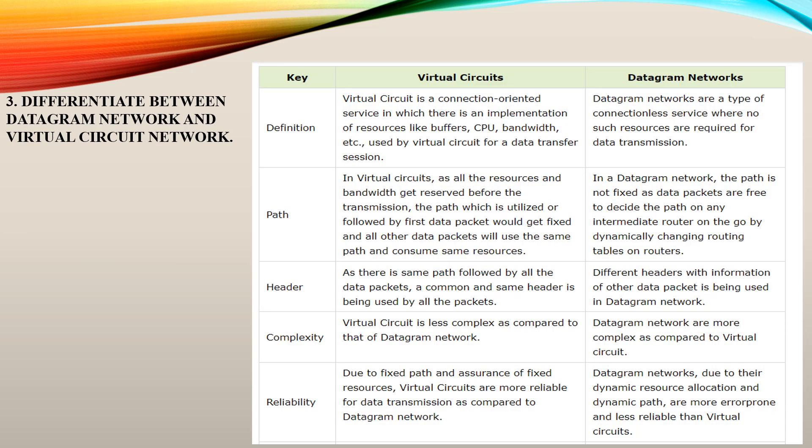Moving on to the next question: differentiate between datagram network and virtual circuit network. A datagram network provides connectionless services — there is no virtual connection between one node and another. In a datagram network, the path is not fixed; the path is determined dynamically by the packets being routed, and each packet chooses a path and moves continuously.